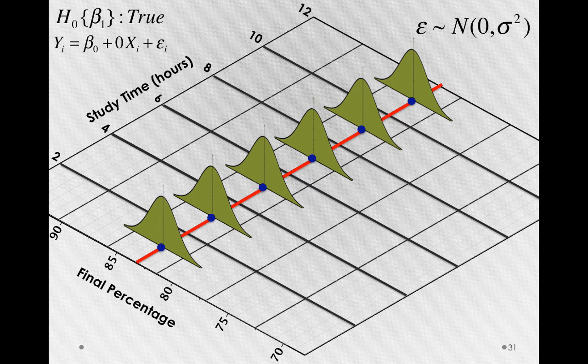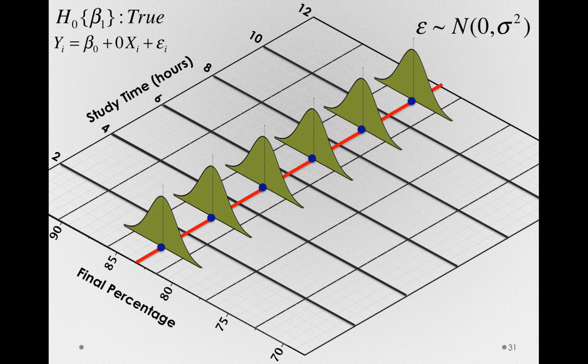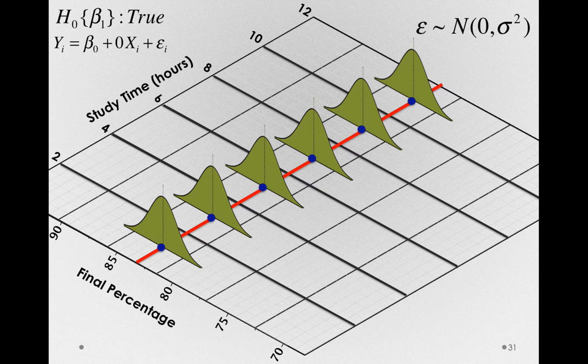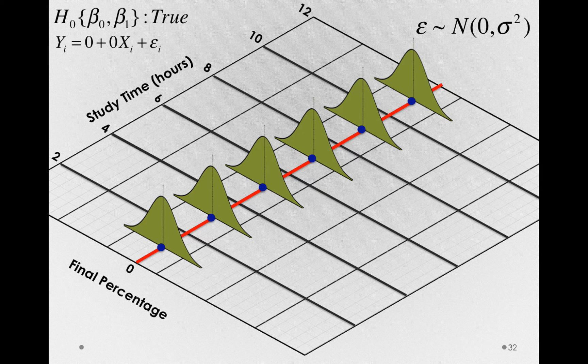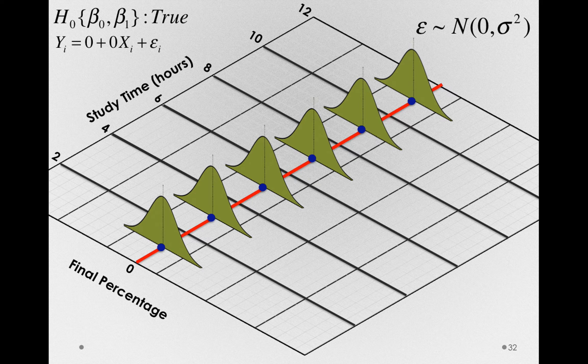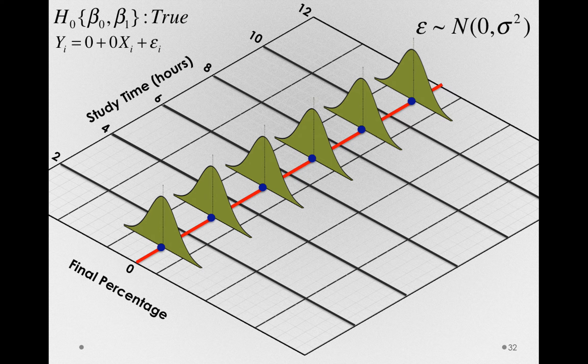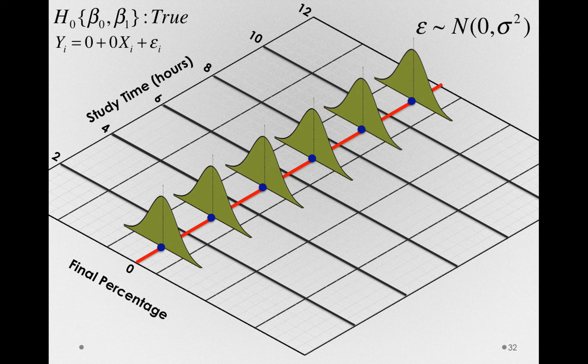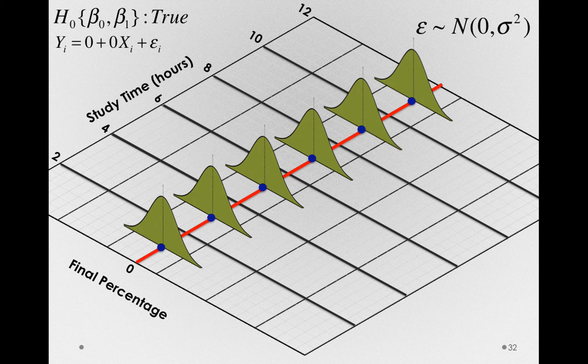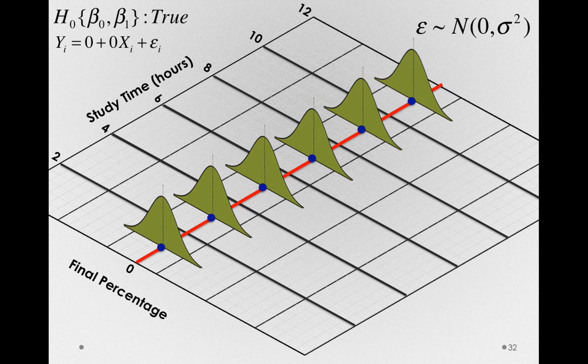Notice that where the intercept is is a different question. I have the intercept drawn to be about 83, but I could also as easily draw it at zero. This would be rather strange for final percentage, but notice that the null hypothesis with respect to beta1 has nothing to do with the null hypothesis with respect to beta0.